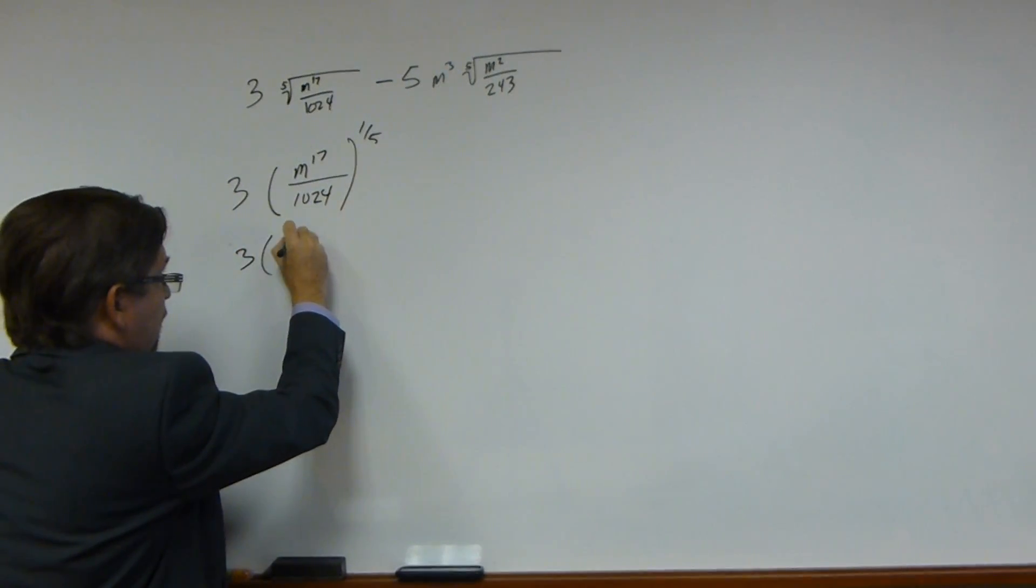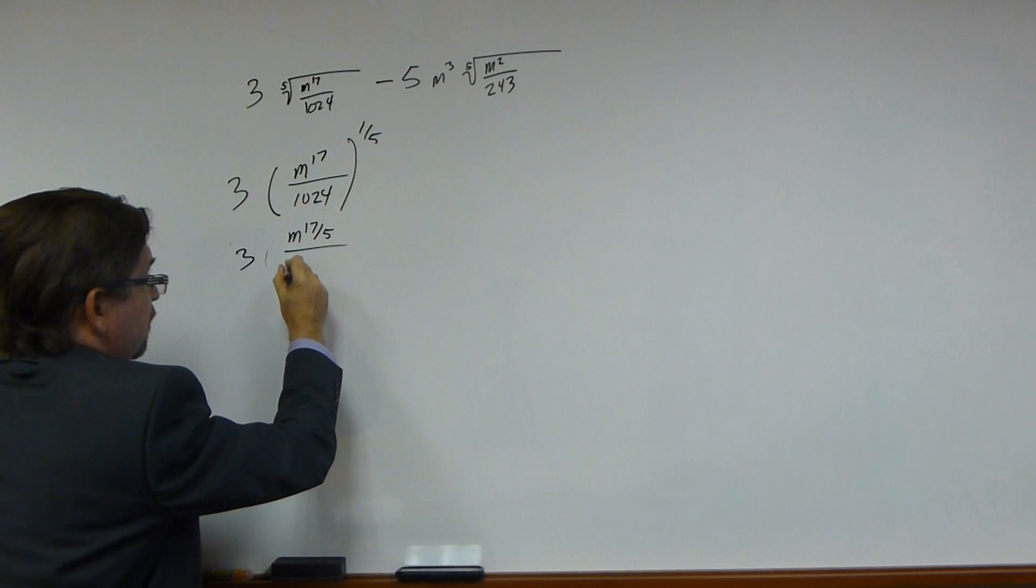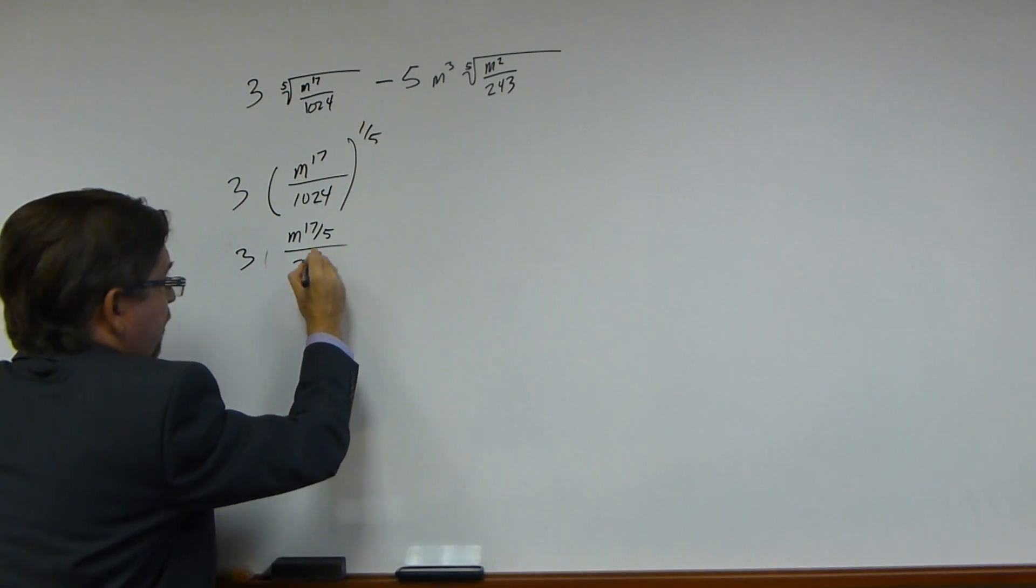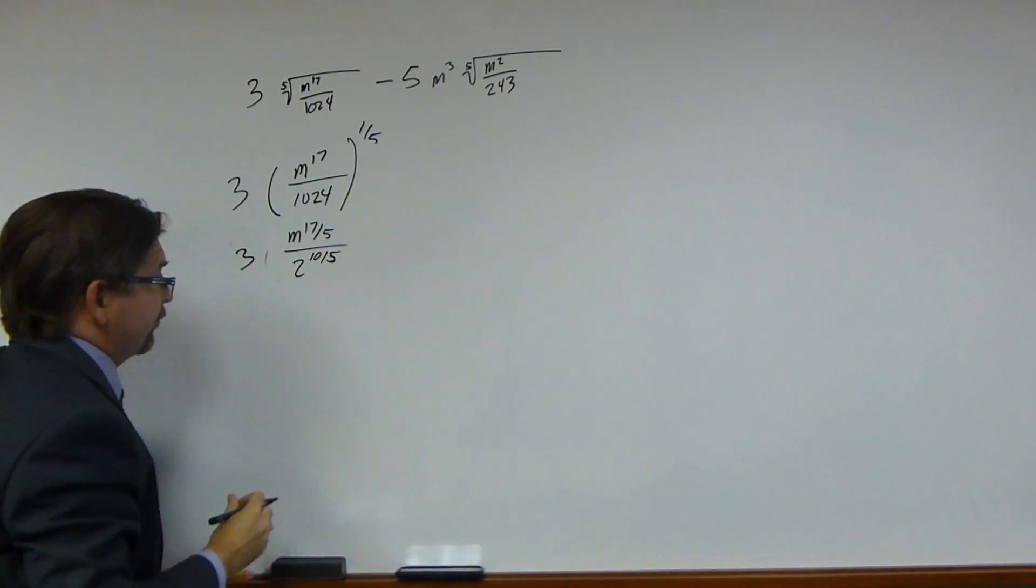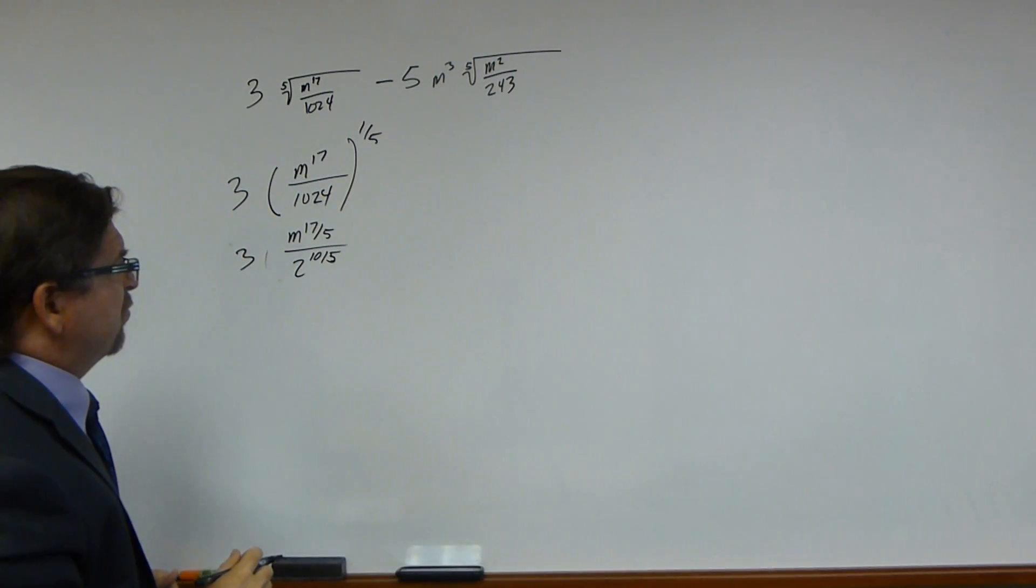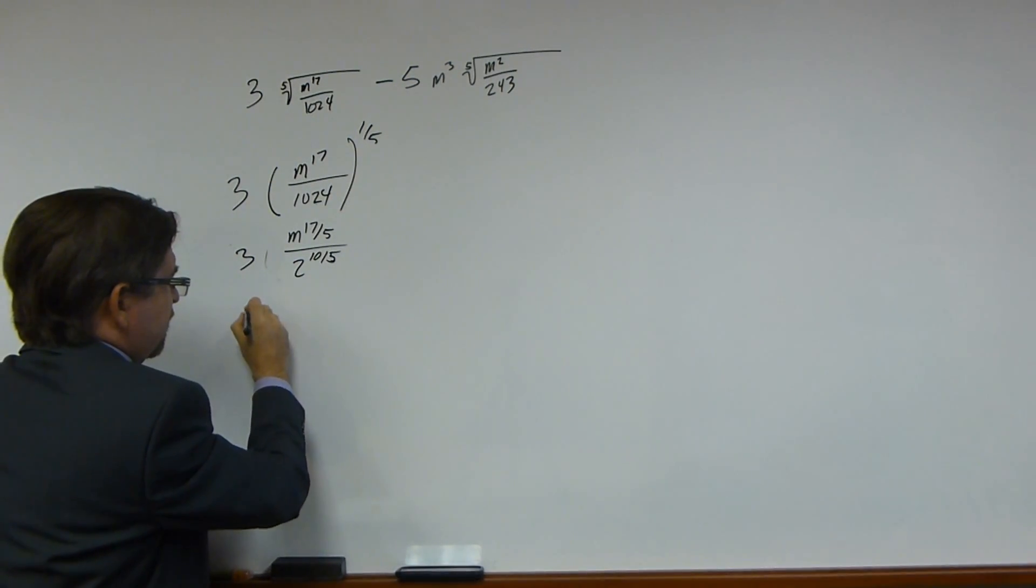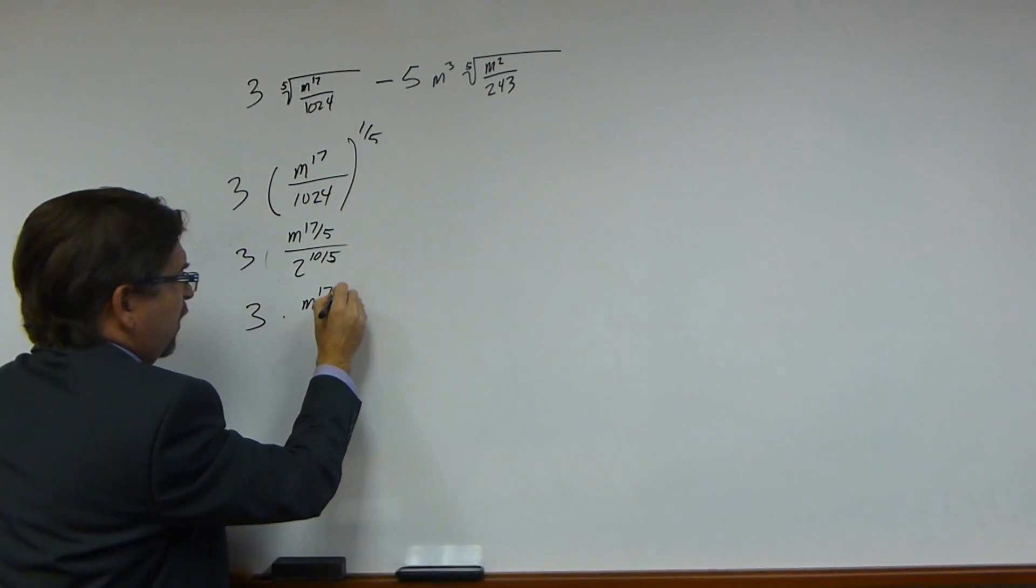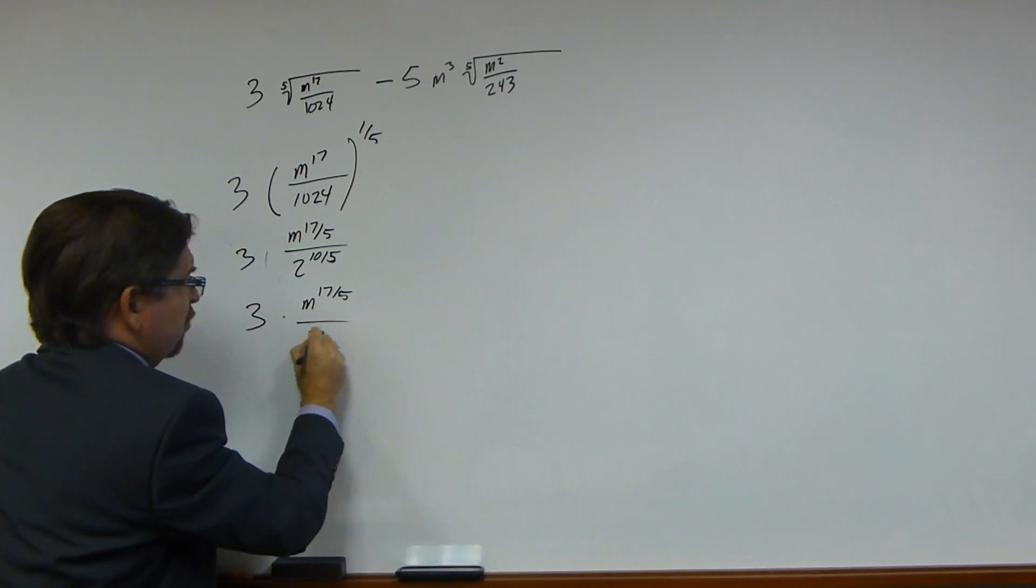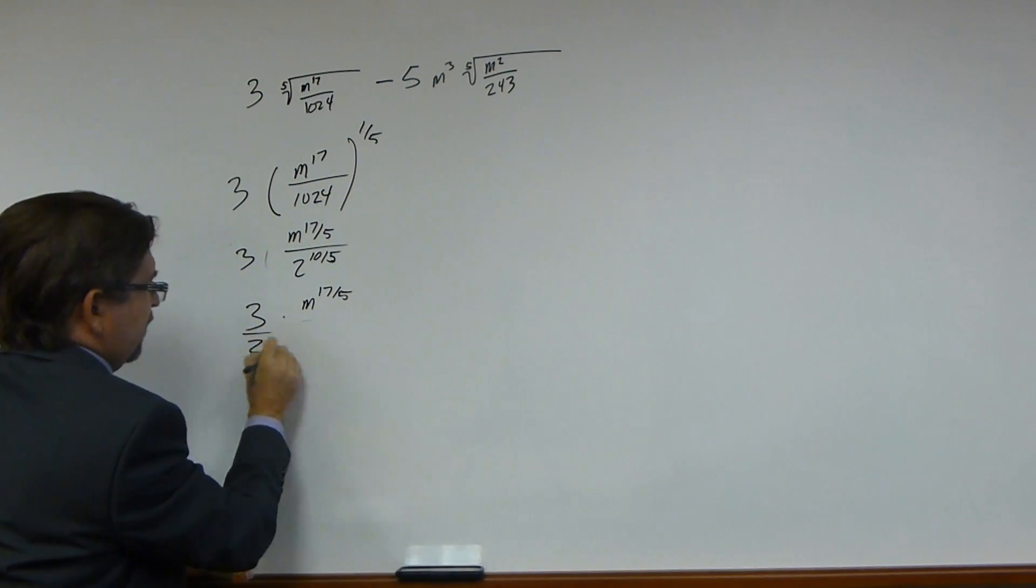So what can we do here? 2 to the 10th power, 3, m 17, divided by 5. Let's take this part to see where it's gone. 2 to the 10th power divided by 5. 10 divided by 5, that's just going to give us 2. So that's 3 times, let's see, m 17 over 5, over 2. Let's pull that 2 over here, just to make it easy.